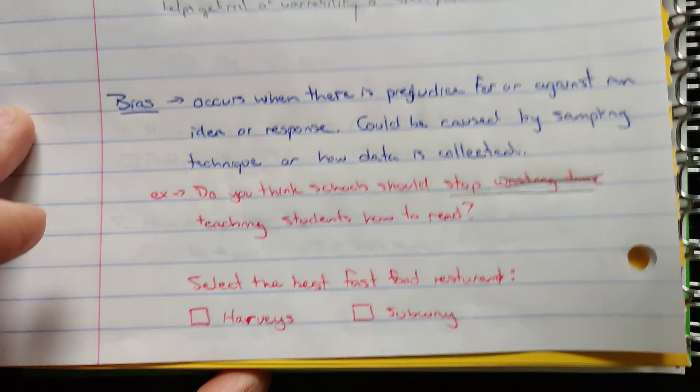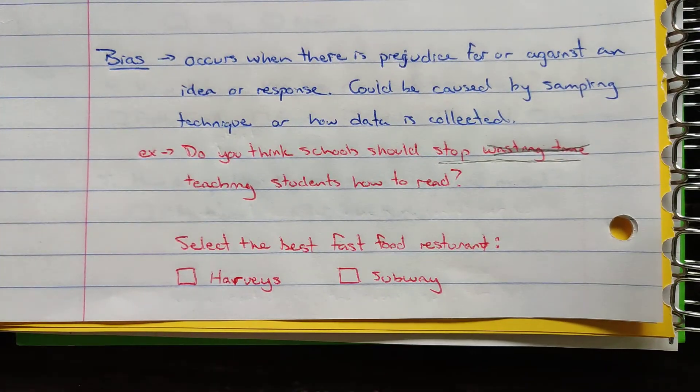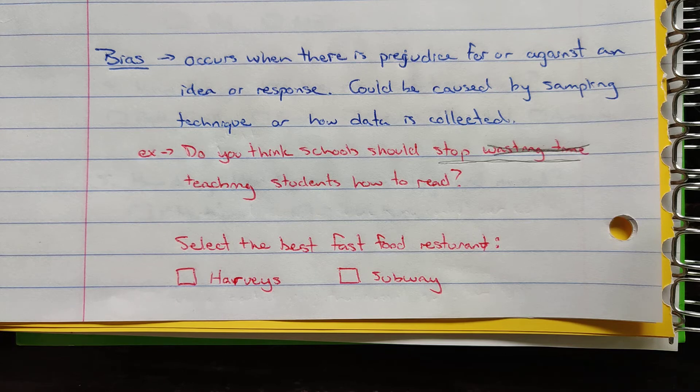In the next case we got select the best fast food restaurant, Harvey's or Subway. What if you don't like either one? What if you think McDonald's is the best fast food restaurant or Wendy's or Burger King? You don't have the option of selecting anything, only the specific options that were given to you. So you're creating bias by limiting options.